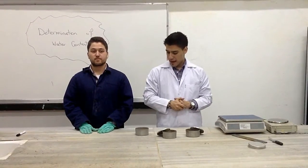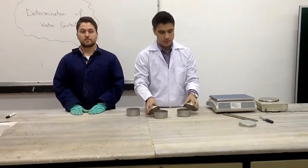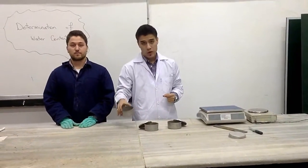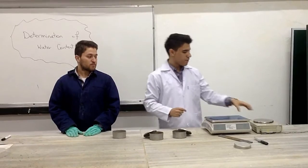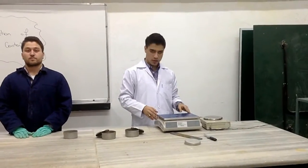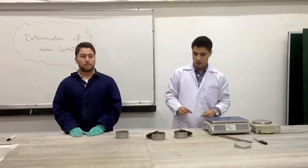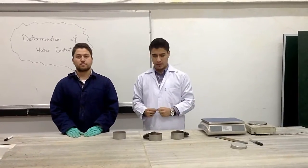Let's start with the equipment we have today. We have moisture cans, we have the moist soil, we have the balance with the precision of 0.01 gram, and we have the volume that we're going to use at the end of the experiment.